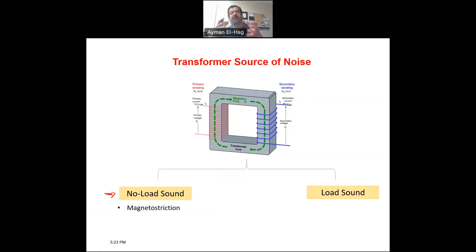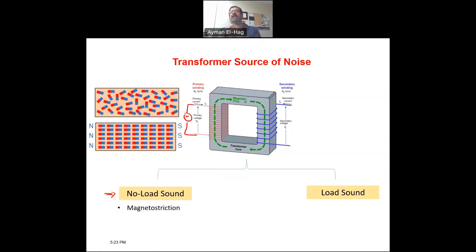Because when we energize the transformer, we apply the voltage here and start to have the flux. Because we know that the core is composed from magnetic dipoles. And when the transformer is not energized, they are randomly oriented. Once you energize the transformer, these magnetic dipoles will start to align with the positive cycle in one direction and then completely 180 degrees when you change the polarity of the voltage. And they keep on orienting themselves.